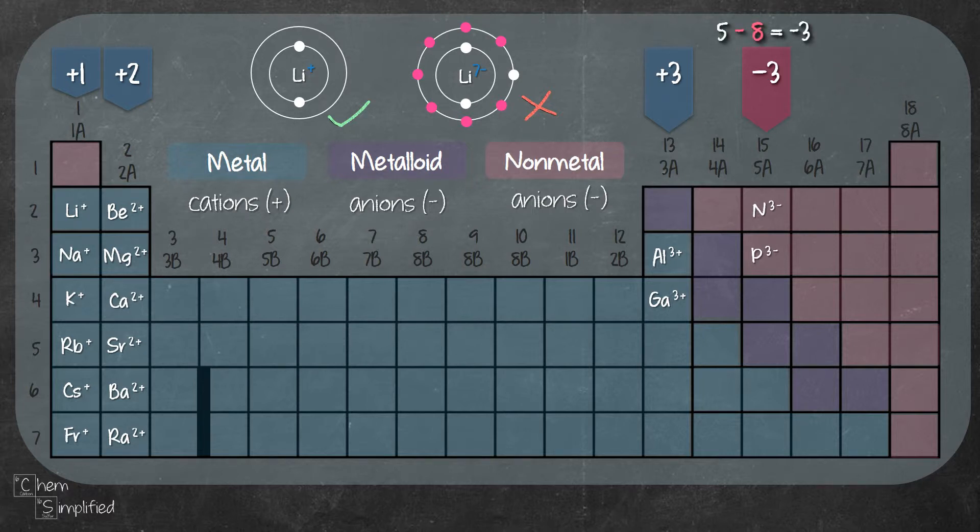5 minus 8 will give us -3. For elements in group 6A, which are the chalcogens, it will give us -2. And for halogens, it will give us -1.